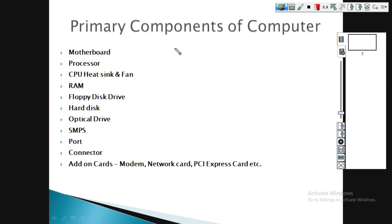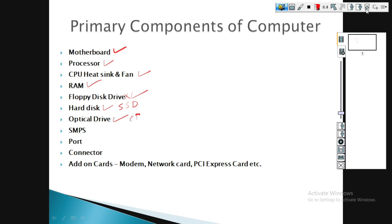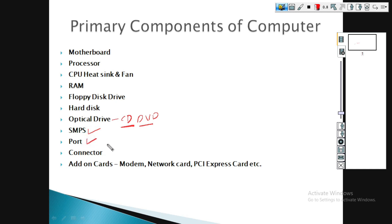The primary components of the computer are: motherboard, processor/CPU, heatsink and fan, RAM (random access memory), floppy disk drive (outdated), hard disk (latest technology), SSD, optical drive including CD drive and DVD drive, SMPS (switch mode power supply), ports including USB port, serial port, and parallel port, connectors, add-on cards including modem, network cards, and PCI express.